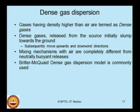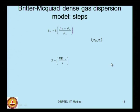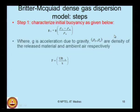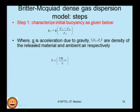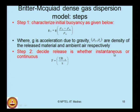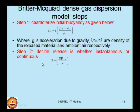The Britter-McQuaid dense gas dispersion model is commonly used in the literature. Step 1 is to characterize the initial buoyancy G0, where G is the acceleration due to gravity, and rho_0 and rho_a are the densities of the released material and ambient air respectively. Step 2 is to decide whether the release is instantaneous or continuous, since the mixing mechanism differs for each case. The criterion uses the expression with wind velocity u, distance x from the release point, and release duration r_d.